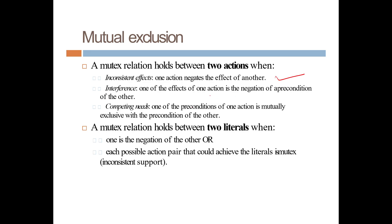So mutex between two actions holds when there are inconsistent effects, interference (one action's effect negates another's precondition), or competing needs (preconditions are mutually exclusive). Mutex relation also holds between two literals when one is the negation of the other, or when each possible action pair that could achieve those literals is itself mutex — this is called inconsistent support.